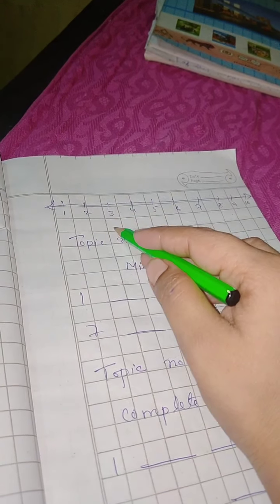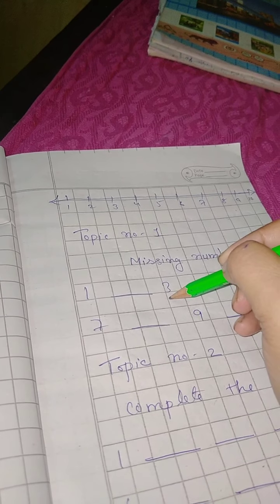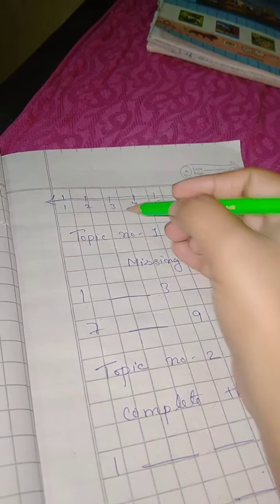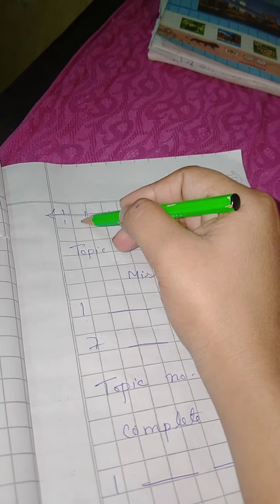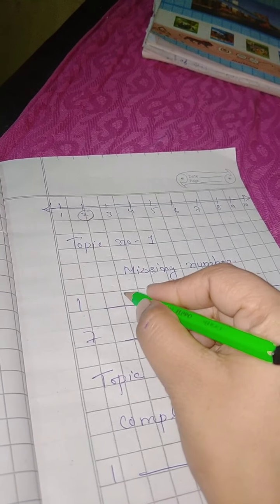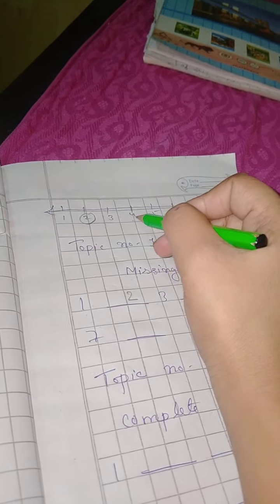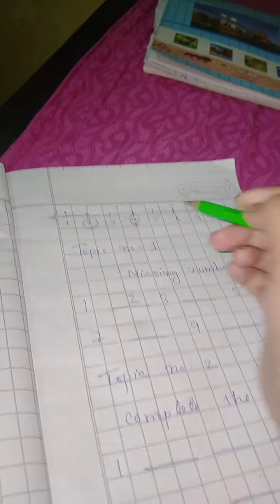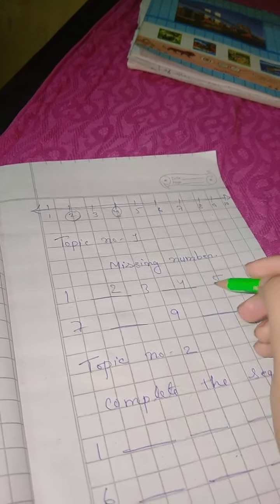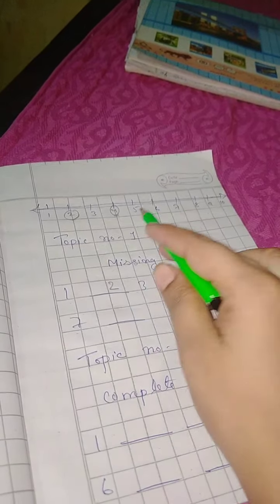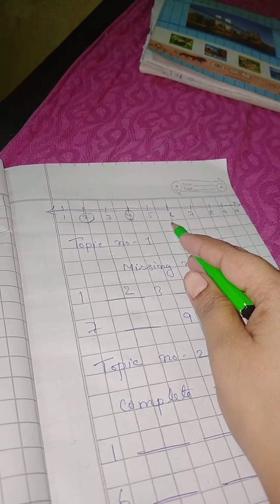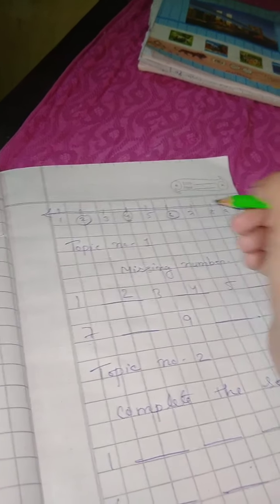One and three, between them what are we missing? Two is missing, so we write 2 here. Three and five, between them 4 is missing. Five and seven, we are missing 6, so we write 6.